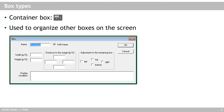The first box I want to discuss is the container box. The container box itself is not visible, but it can be used to organize other boxes on the screen. You can place a container box in your stage tree and then put other boxes inside it. In the container box dialog you can specify the width and height of the container, distance to the margin, the adjustment to the remaining box, and the display condition.